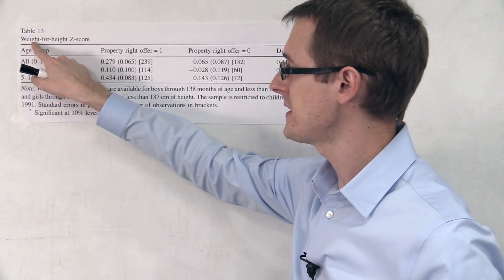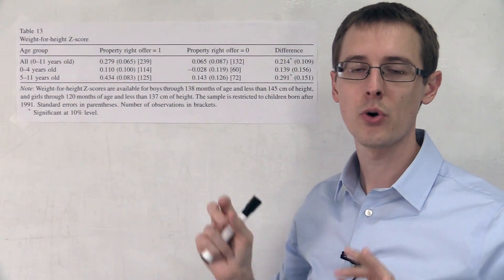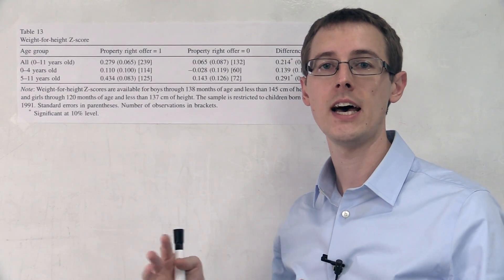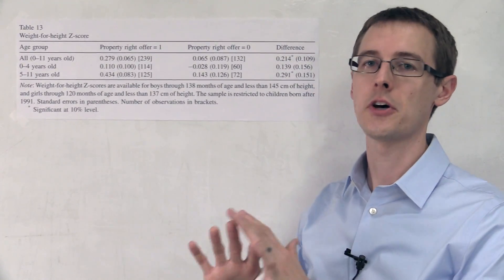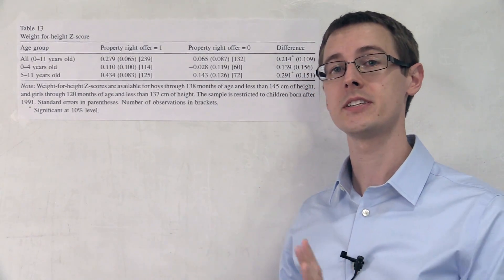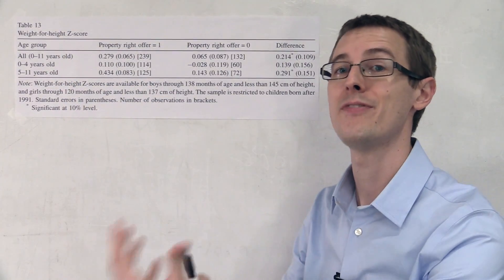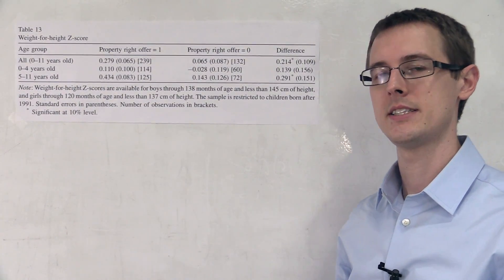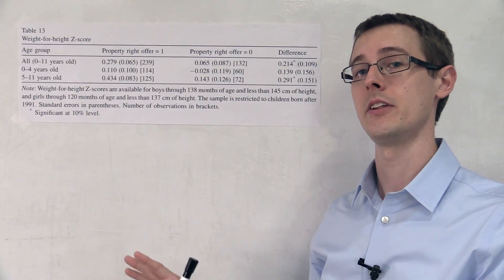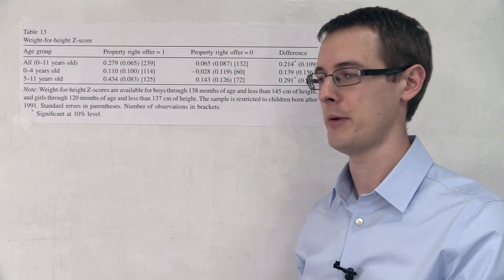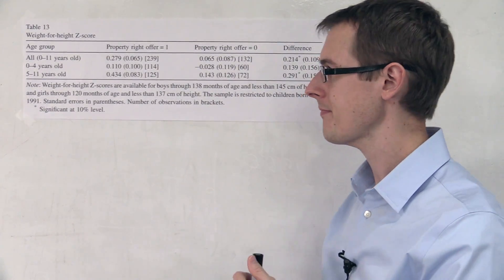Our outcome variable here is called weight-for-height z-score. This is a short-term measure of children's health status, and larger numbers are better. They'll talk about it a lot more in the paper and in this literature on how you measure health, but for now: larger is better, and it's a measure of child health.